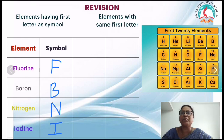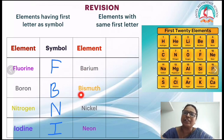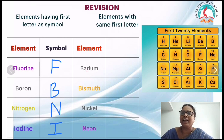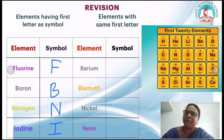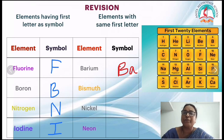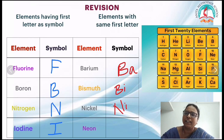When some elements share the same first letter, we include the second letter. For example, barium and bismuth both start with B. So barium is Ba — the second letter is written in small — and bismuth is Bi. Similarly, nickel is Ni and neon is Ne.